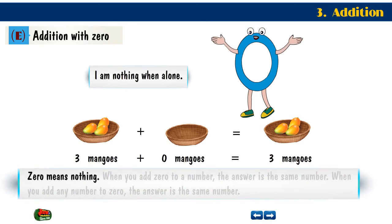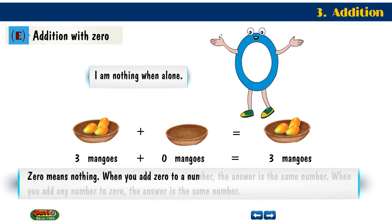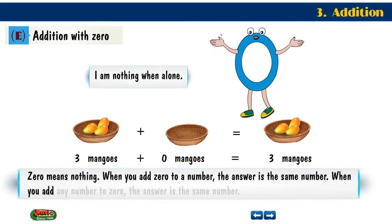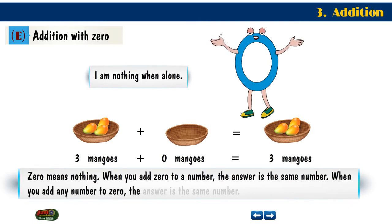When you add zero to a number, the answer is the same number. When you add any number to zero, the answer is the same number.